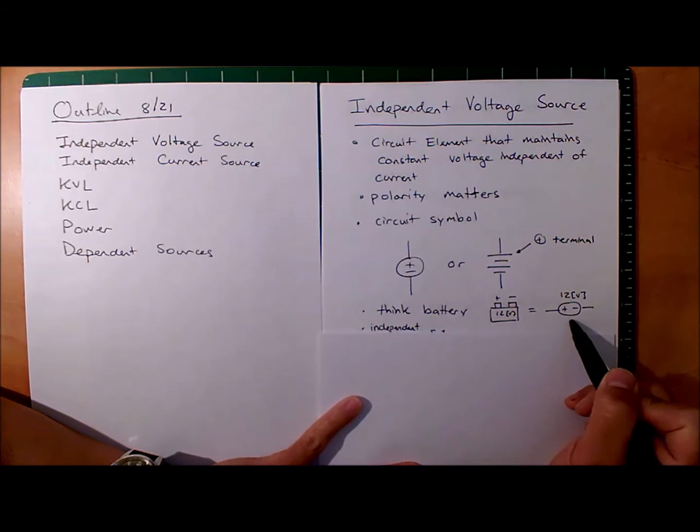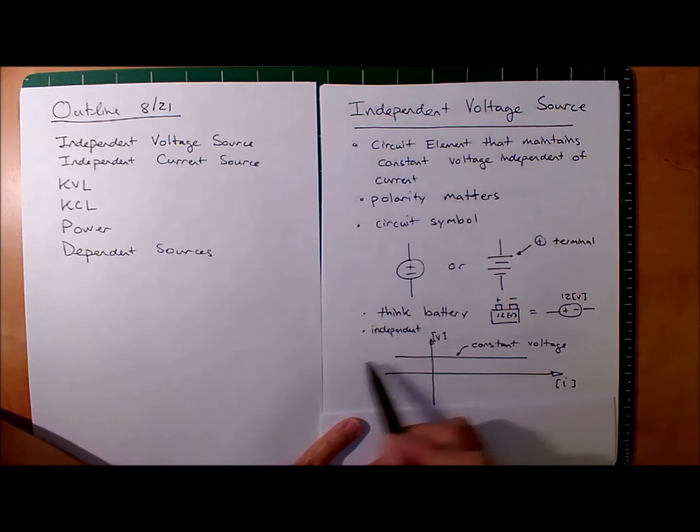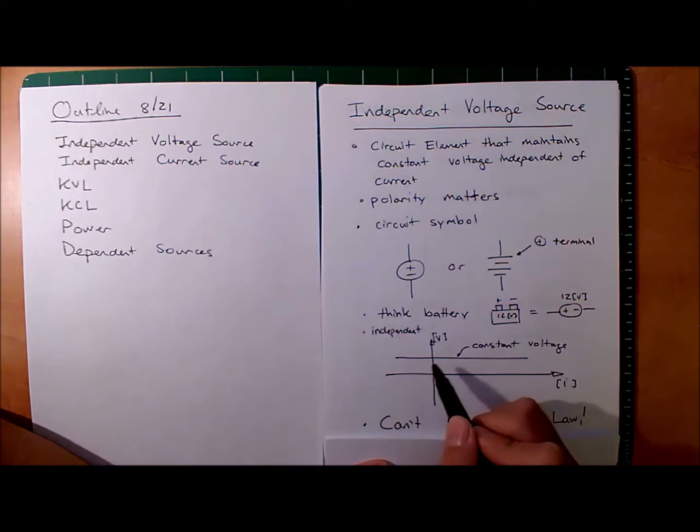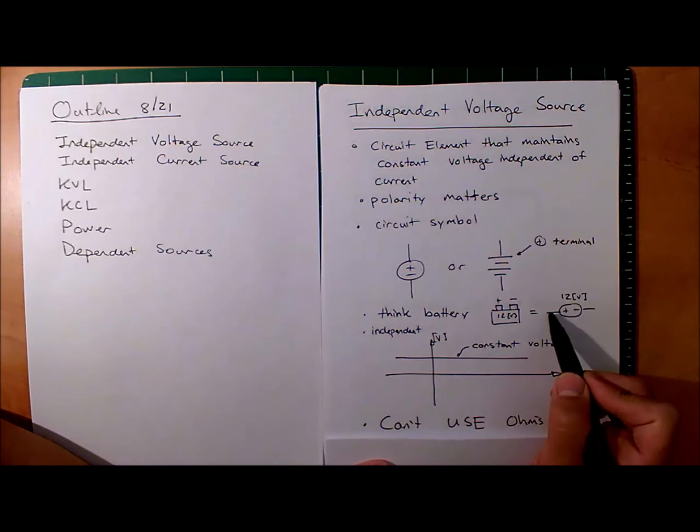A plot of current versus voltage would show a constant voltage regardless of what current is being drawn — in this case, 12 volts. Now, you cannot use Ohm's law for this. V equals plus or minus IR — no. You cannot use it for an independent voltage source. It's tempting, you might have some voltage and some current, but what would be the resistance? No.